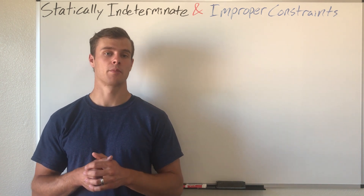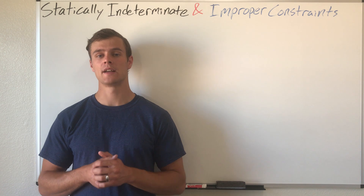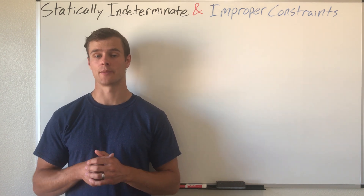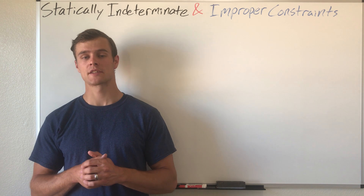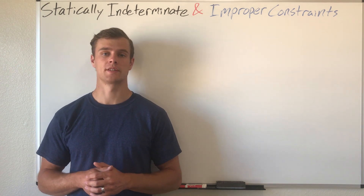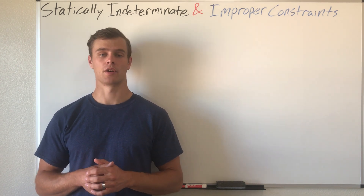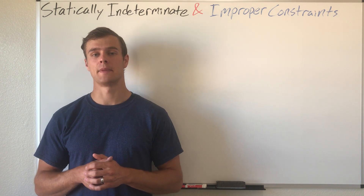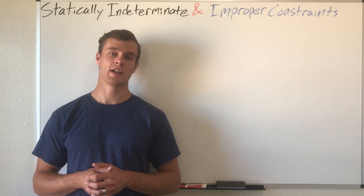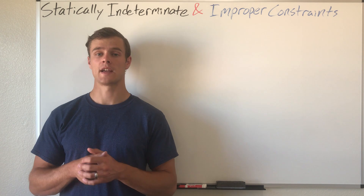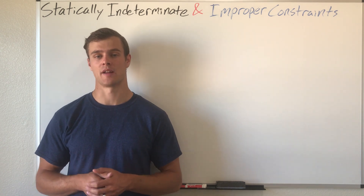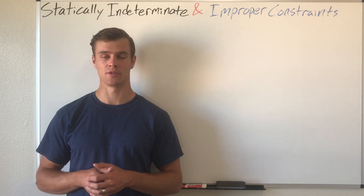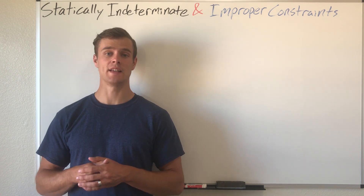In a machine it might be a part of your frame that takes over if another part fails. But redundancy causes there to be more support reactions, which causes there to be more unknown forces in your object, so you have more unknowns than knowns — which is what statically indeterminate objects are.